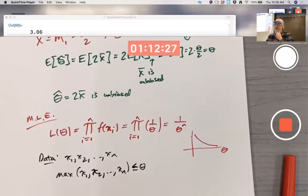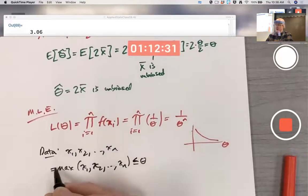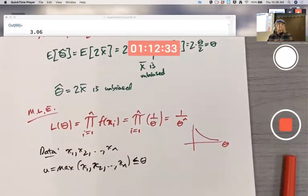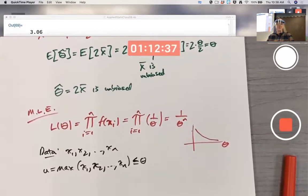The maximum of those numbers, and for a given data set that maximum is a fixed number commonly called U, little U. Theta must be greater than or equal to little U, whatever little U is.